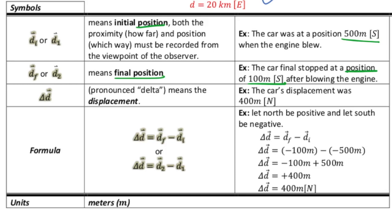So the initial position was 500 meters south of you. The second or final position was 100 meters south of you. Therefore, the car's displacement was 400 meters north. Now think about it. It was 500 meters south of you, then it came towards you. And since it was south coming towards you, that must mean that it was traveling north.